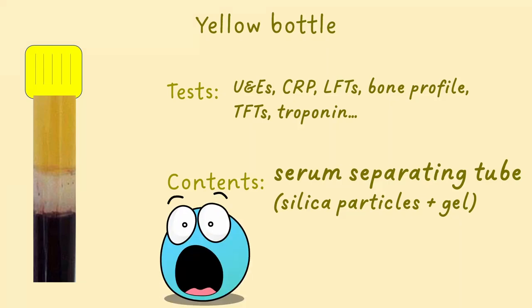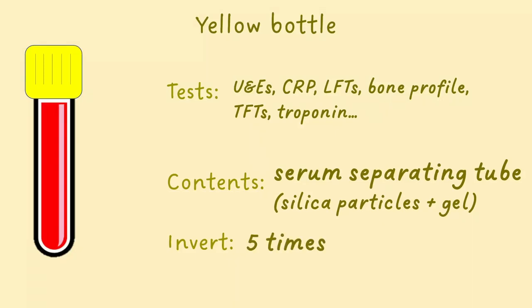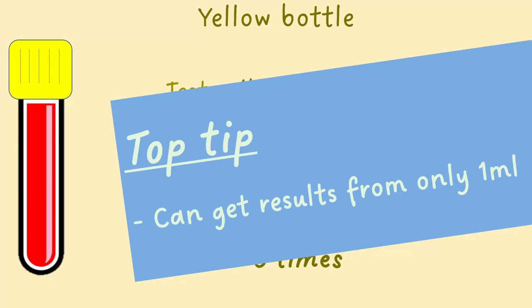So if you see the blood clotting in this tube, don't worry, that's supposed to happen. The yellow bottle should be inverted around five times to properly mix the blood. You can get a surprising amount of information from not much serum in the lab, so if you can only partially fill a yellow bottle, make sure you still send it.